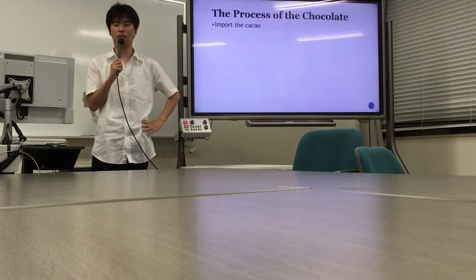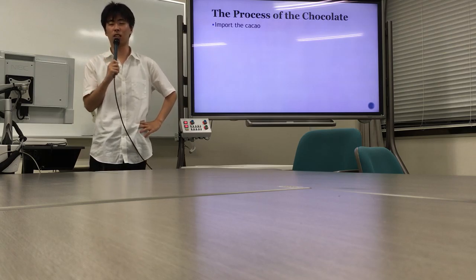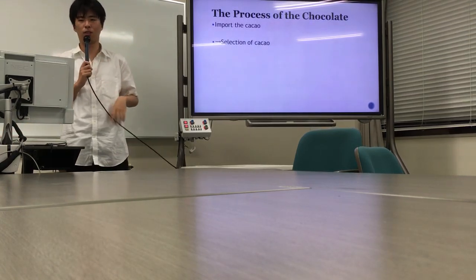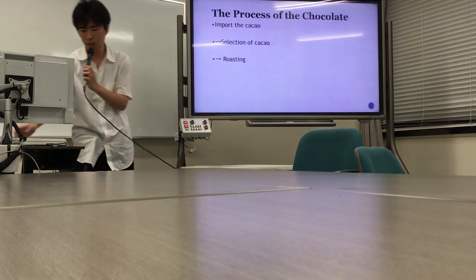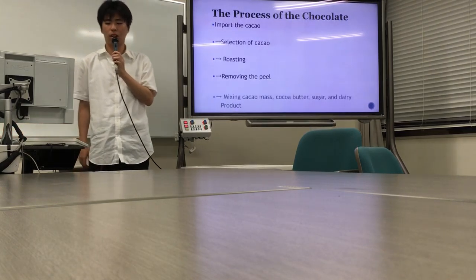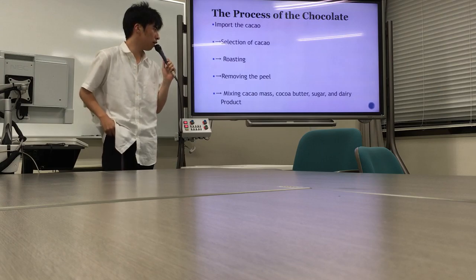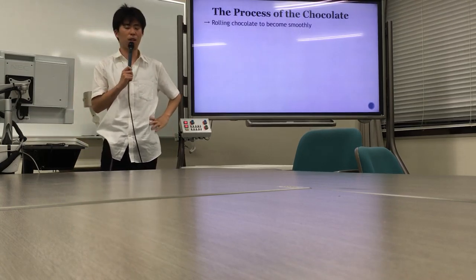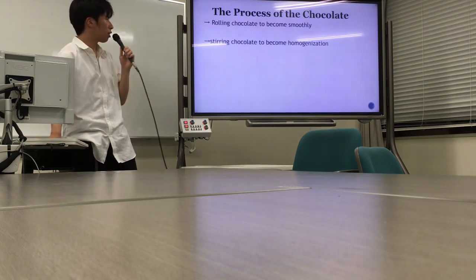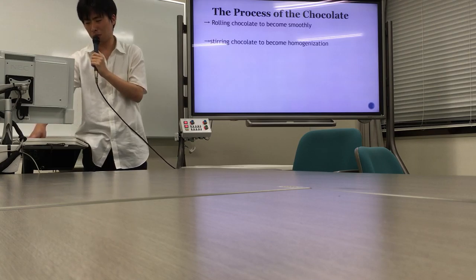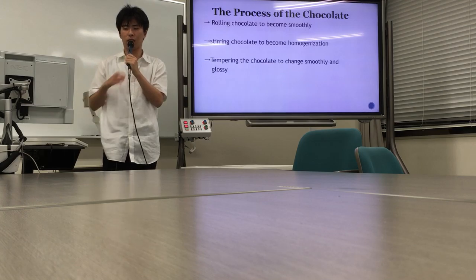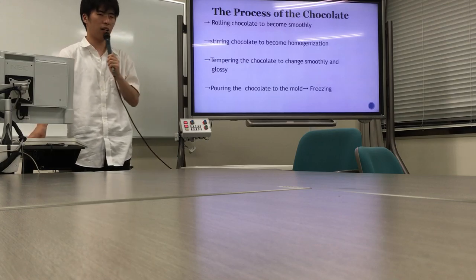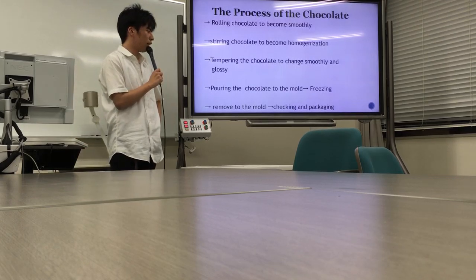Next I want to talk about the process of making chocolate. First, we need resources — the first step is importing cacao. The next is selection of cacao, then roasting, then removing the peel. The fifth step is mixing cacao mass, cocoa butter, sugar, and dairy products like milk or cream. Next is rolling the chocolate to make it smooth, then stirring the chocolate for homogenization, then tempering the chocolate to make it smooth and glossy. Then pouring the chocolate into molds and freezing. The last step is removing from the mold, checking, and packaging.